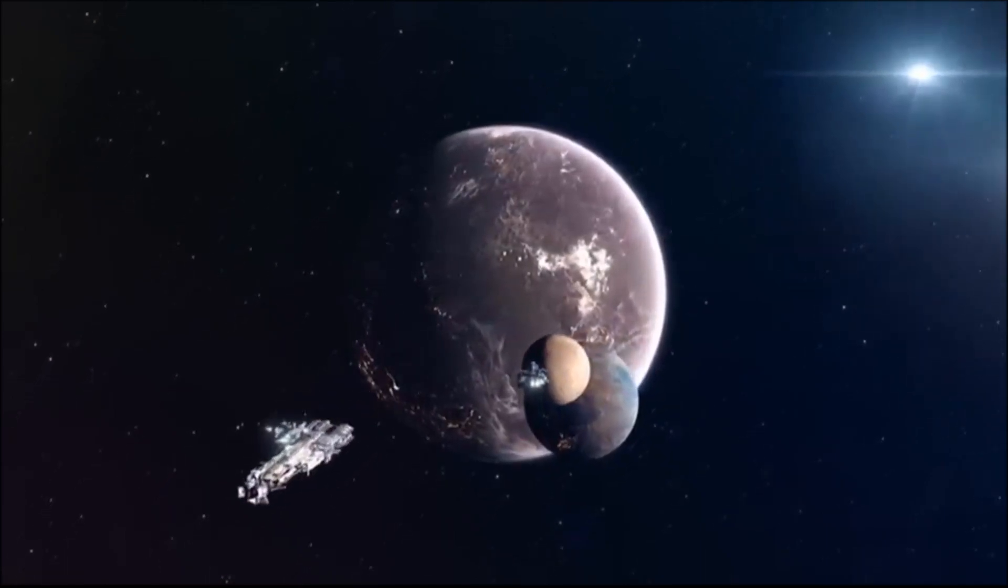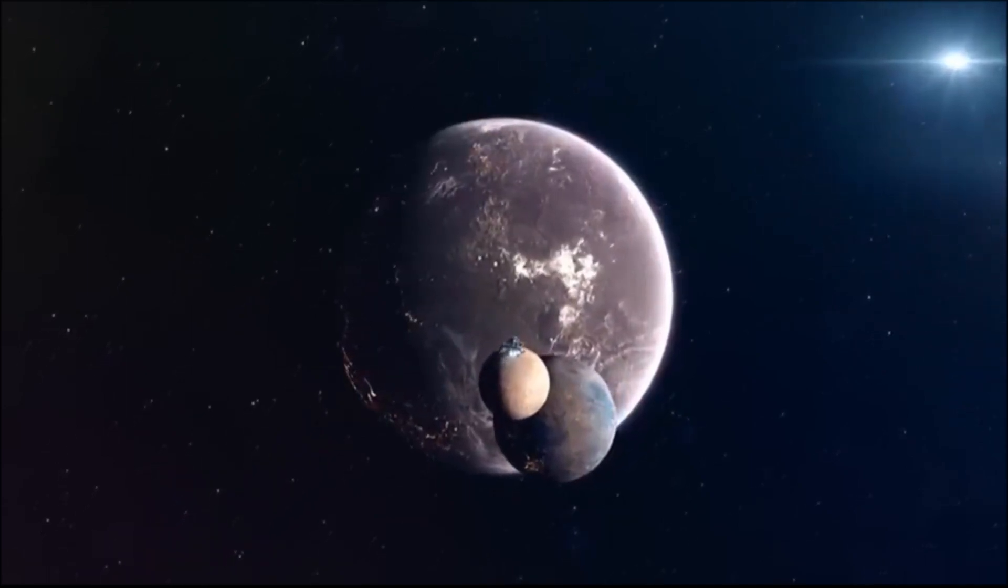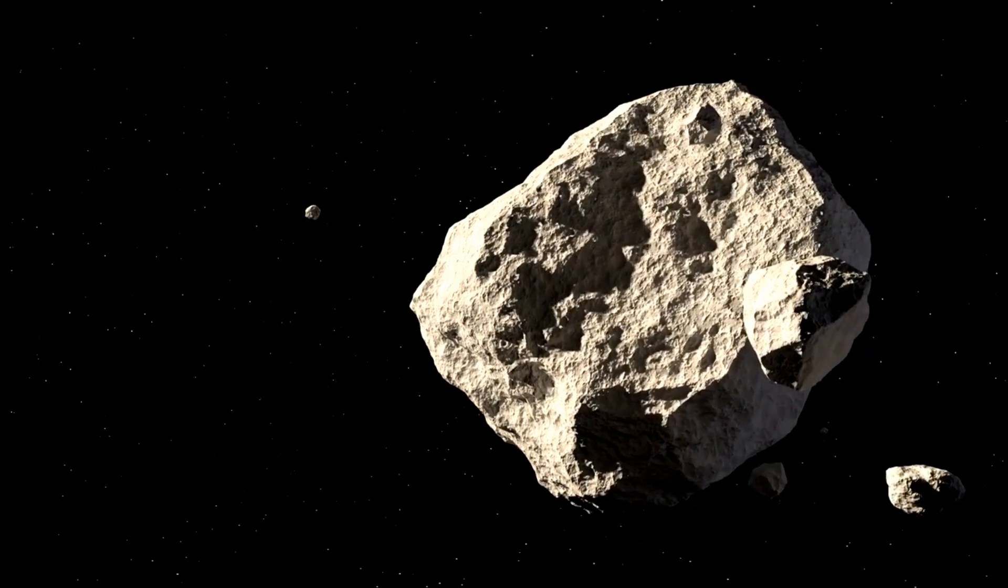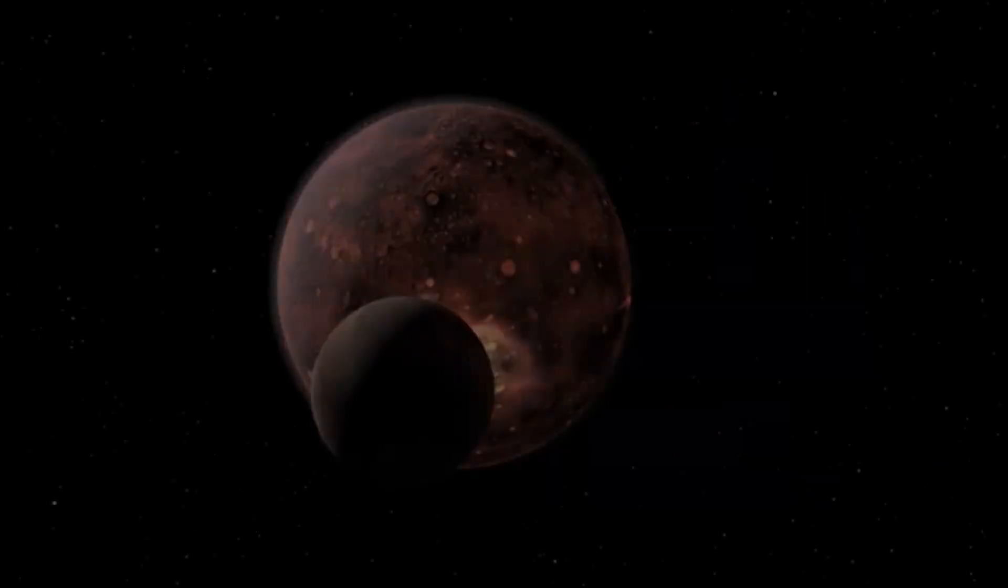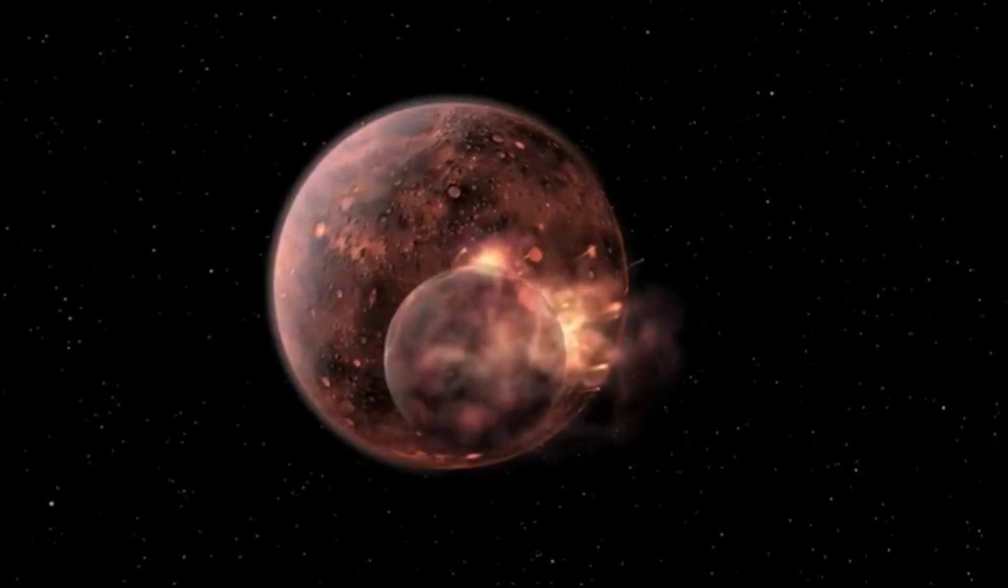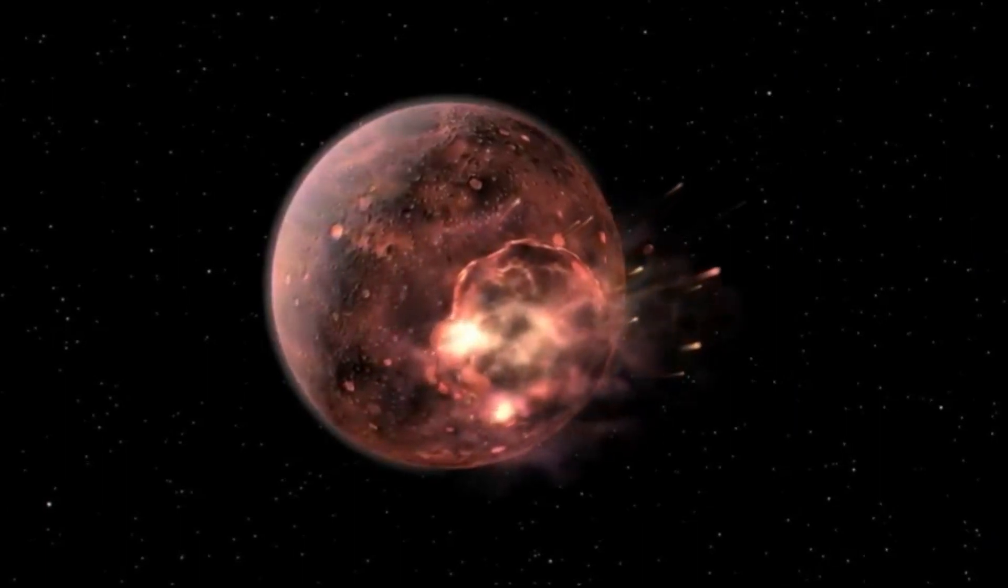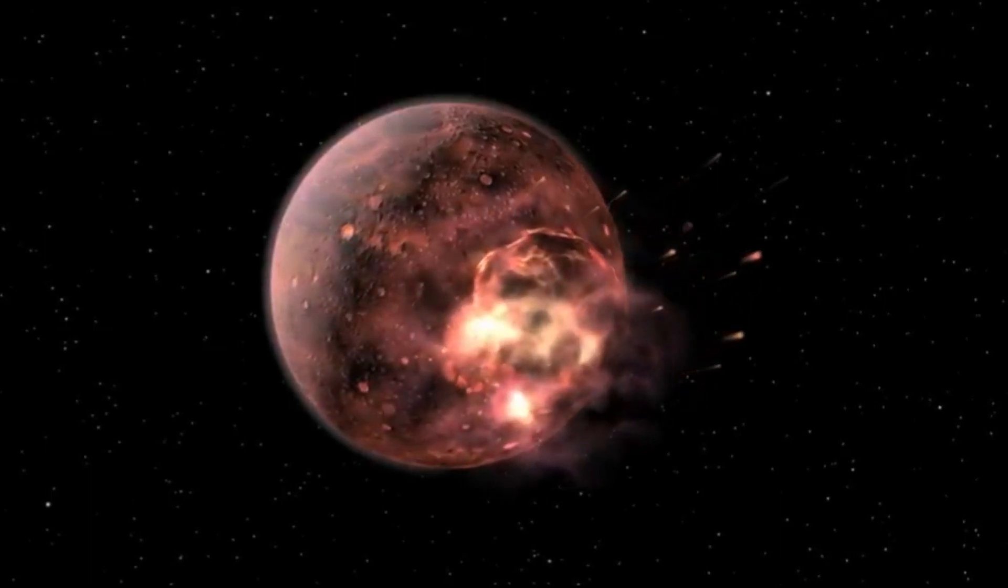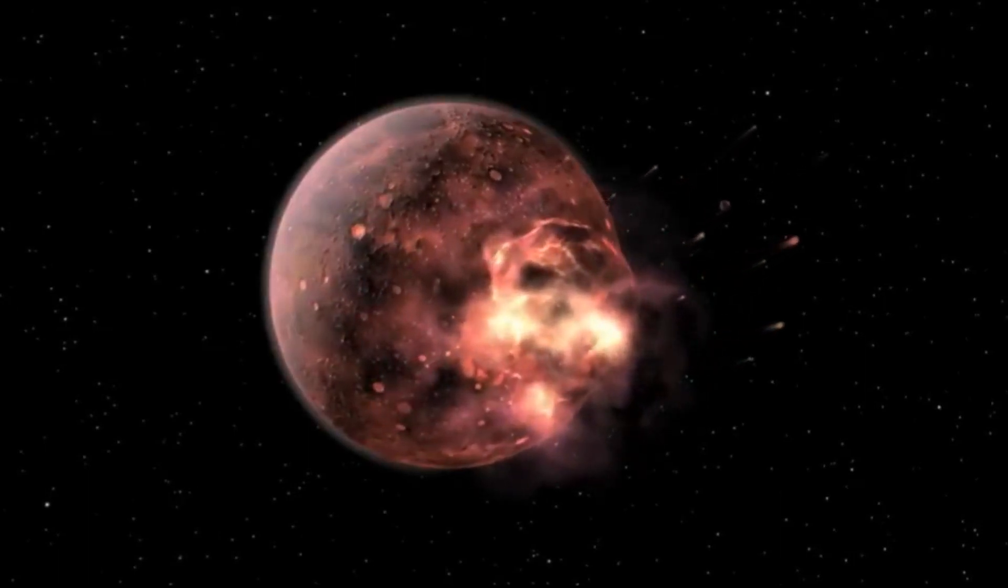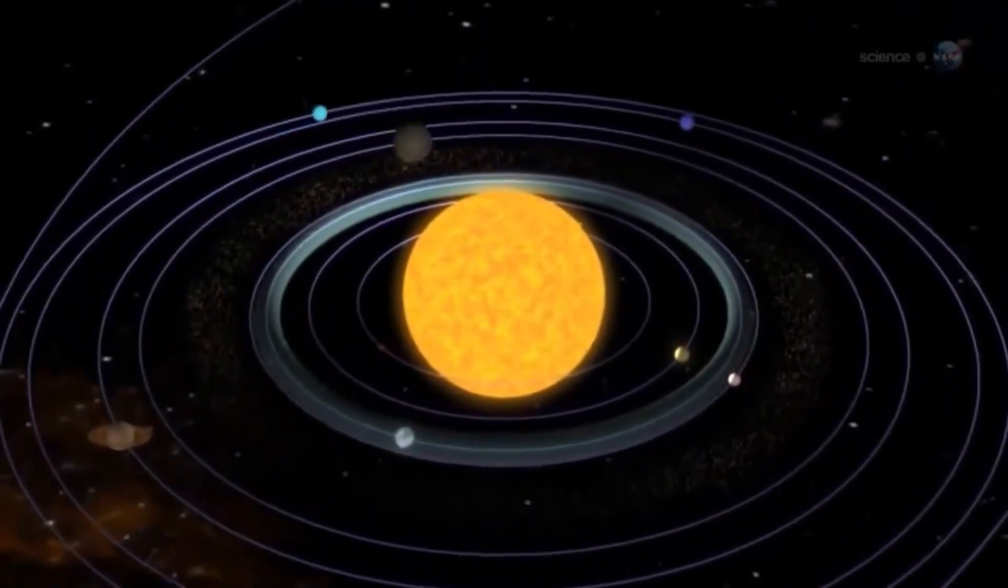Interstellar objects originate from planetary systems other than our own, propelled into interstellar space through two primary mechanisms: colossal collisions that fragment protoplanets and the gravitational forces exerted by wandering gas giant planets. The identification of Oumuamua as the initial interstellar visitor provides valuable insights into the characteristics of extrasolar planetary systems.